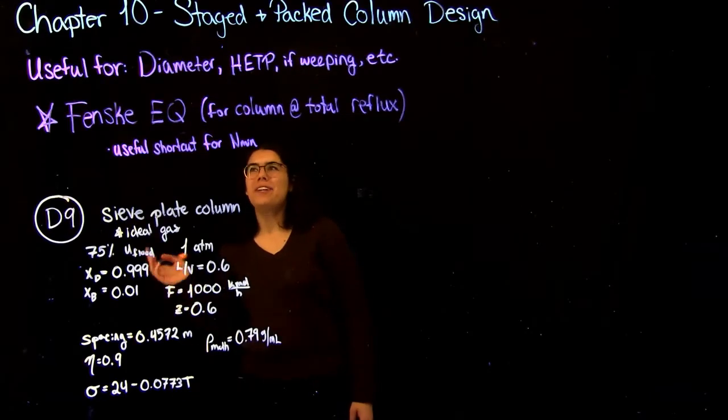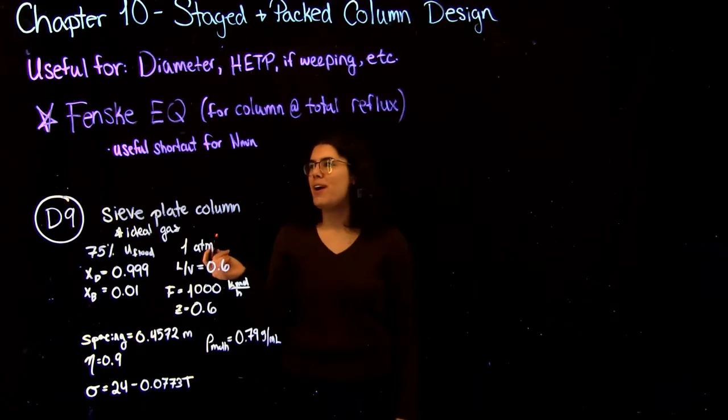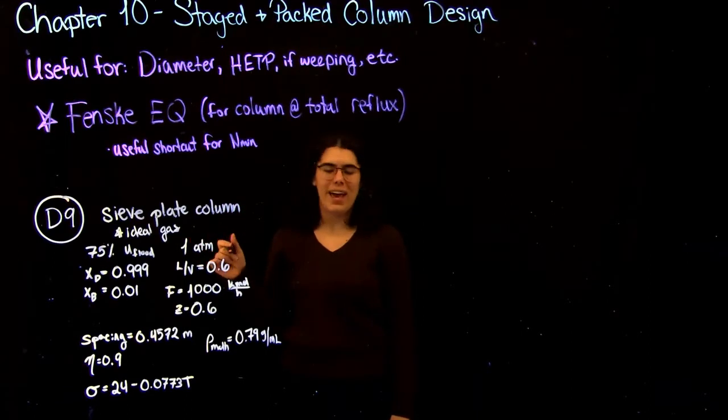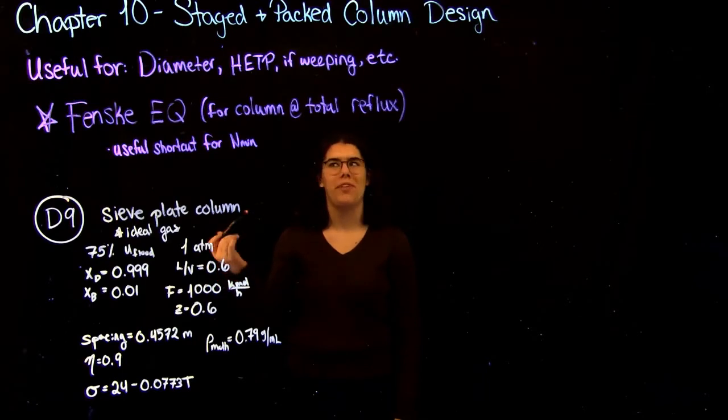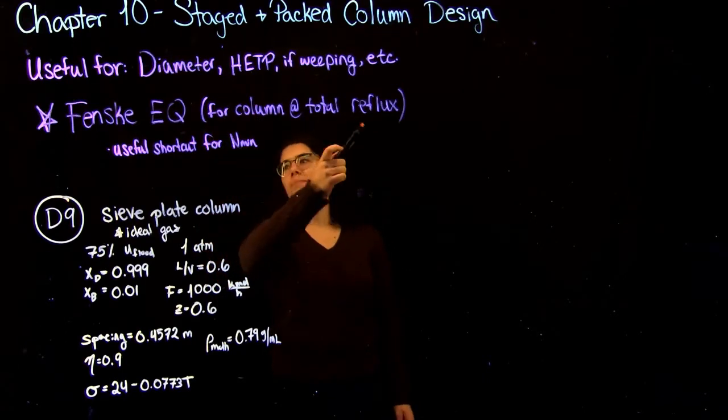Hi guys, so in today's video we're going to be covering Chapter 10, Staged and Packed Column Design. Basically what this chapter covers are the correlations and details in designing a column. That's useful for finding things like the diameter, the HETP, or if the column is weeping.